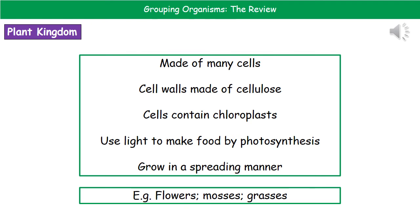If we consider the plant kingdom first, when we look at all of the organisms within it, they've got certain features in common. First, they're made of many cells. Second, they've got cell walls made of a chemical called cellulose. Third, they contain chloroplasts within their cells. They also use light to make food by photosynthesis and they grow in a spreading manner. Examples include flowers, mosses, grasses, and so on.